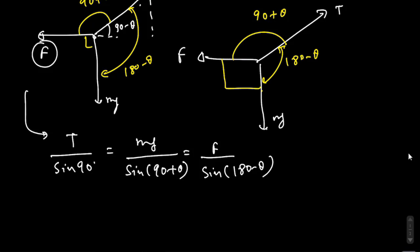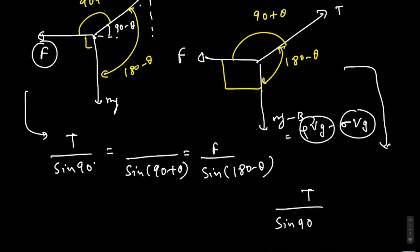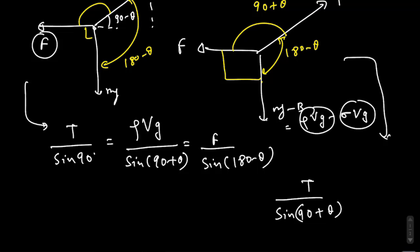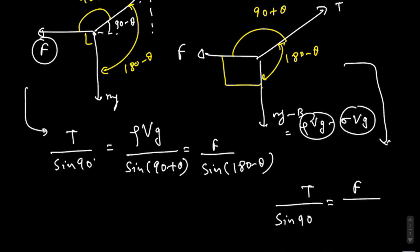We have written here T by sin 90. Here Mg, but there will be a buoyant force, so Mg minus B. That would be ρVg minus σVg. This is buoyant force and this is Mg. So T by sin of 90 plus θ, and F by sin 180 minus θ.